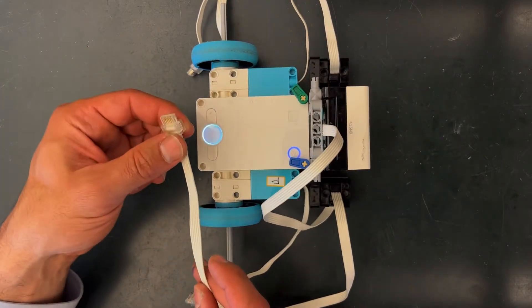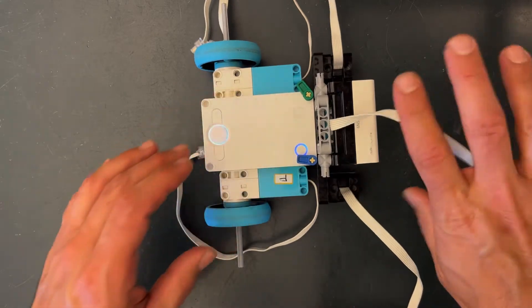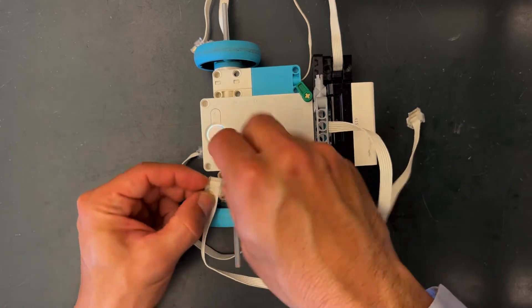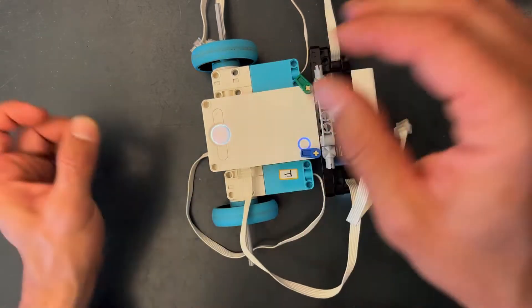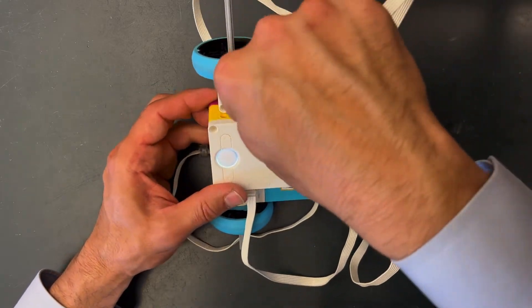Okay so first thing we're going to do is connect the sensors. So the right color sensor we're going to connect to F. The left color sensor we're going to connect to E.